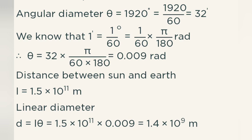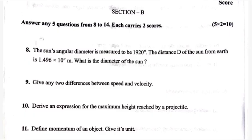Distance between sun and earth L is equal to 1.5 into 10 raised to power 11 m. Linear diameter D is equal to L theta, which equals 1.5 into 10 raised to power 11 into 0.009, which equals 1.4 into 10 raised to power 9 meters.